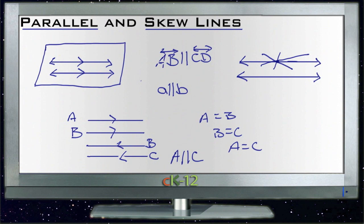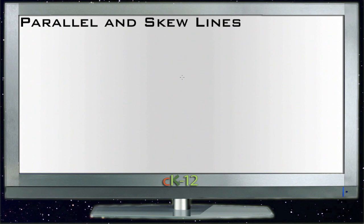Skew lines. Let's clear this and start talking about some skew lines. Skew lines are kind of the opposite to parallel lines. Skew lines are points that are on different planes and never touch each other.